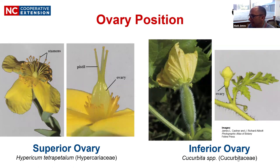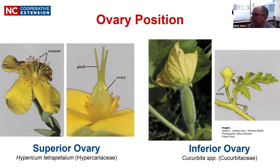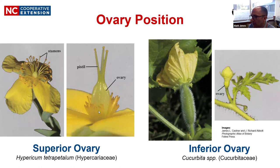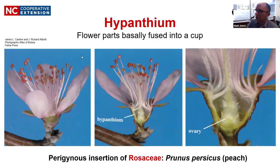An inferior ovary is where the flower parts are attached above the ovary — it almost looks like the ovary has been pushed down below the flower into the pedestal. Classically, plants in the cucurbit family have inferior ovaries. Looking at a cucumber or squash, the stigma and style are visible inside the petals and stamens, but the bulk of the ovary is embedded beneath these parts. This provides an additional layer of protection for the developing ovary so pollinators don't accidentally damage it.